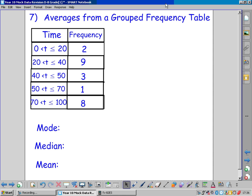Finding averages from a grouped frequency table is pretty similar to finding averages from a normal frequency table. The mode is easy.